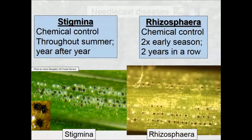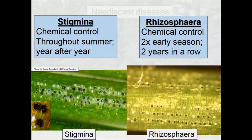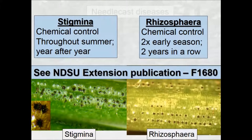With Stigmina, treatment must continue for more than just two years — we need more research, but that's our current recommendation. It's a tough disease to treat. We find it mostly in wetter areas, like the Devil's Lake region. As you go further west — west of Highway 83 from Bismarck to Minot — it lessens considerably. For more information, NDSU Extension publication F-1680 covers needle cast diseases.